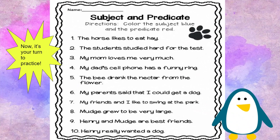Are you ready? Now it's your turn to practice subject and predicate. Directions: color the subject blue and the predicate red. The horse likes to eat hay. The students studied hard for the test. My mom loves me very much. My dad's cell phone has a funny ring. The bee drank the nectar from the flower.